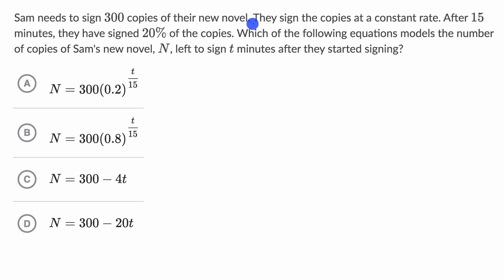Well, they tell us that Sam signs the copies at a constant rate. So if we're signing at a constant rate, an exponential is not going to describe either how many we've signed or how many are left to sign. So we can immediately rule out choices A and B.